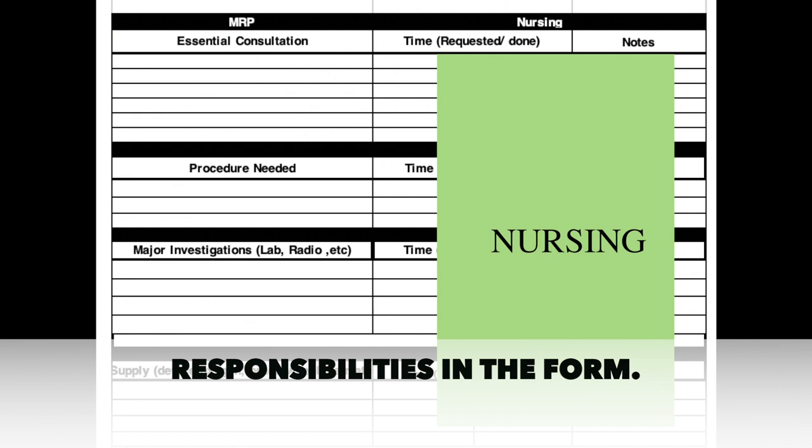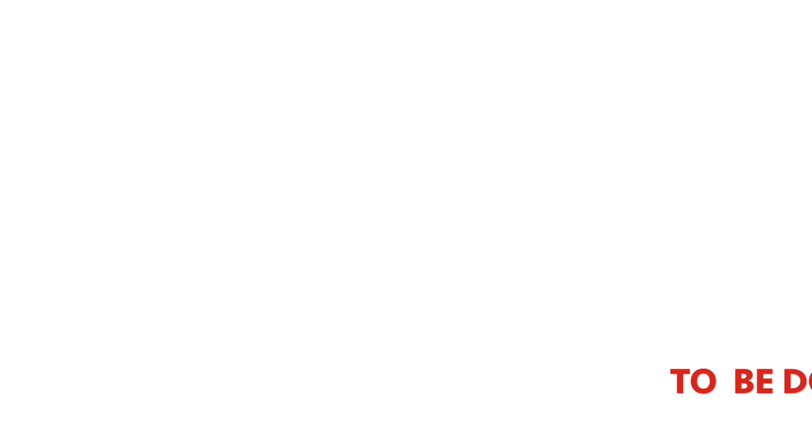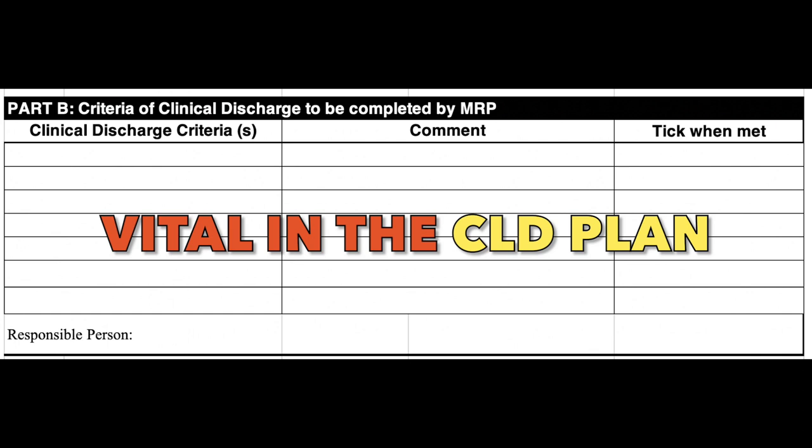Part B of the form is the criteria of clinical discharge that is to be filled out or completed by the MRP. There are three columns in this area: clinical discharge criterion or criteria, comments, and each of them is vital in the treatment process. In this area, we can see the progress of the management in the patient care.